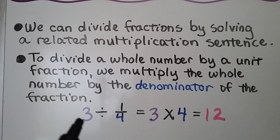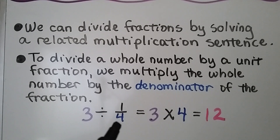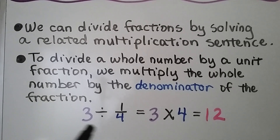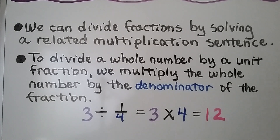We have the whole number 3, and we just multiply it by the denominator of this unit fraction. Remember, unit fractions have 1 for a numerator. We just do 3 times 4, which equals 12. So 3 divided by 1 fourth is equal to 12.